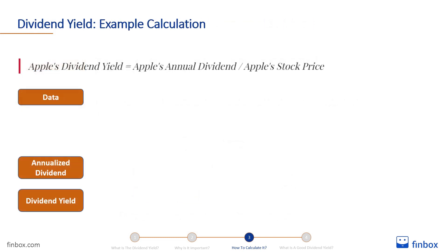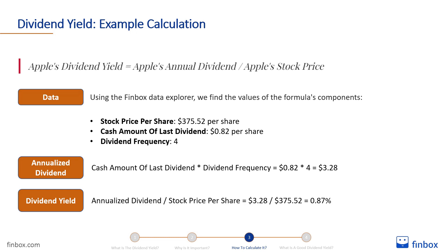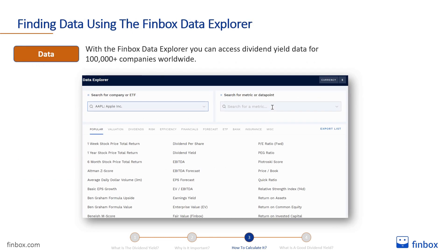Let's use the formula to calculate Apple's dividend yield. It is equal to Apple's annual dividend divided by Apple's stock price. Using the Finbox Data Explorer, we find the values of the formula's components. Apple's stock price per share is $375.52. The cash amount of the last dividend is $0.82 per share, and Apple's dividend frequency is 4. Based on the dividend frequency of 4, we can conclude that Apple pays dividends quarterly, so we can calculate the annualised dividend payout by multiplying the cash amount of the last dividend by the dividend frequency. We can now calculate Apple's dividend yield by dividing the annualised dividend payout by the stock price per share.